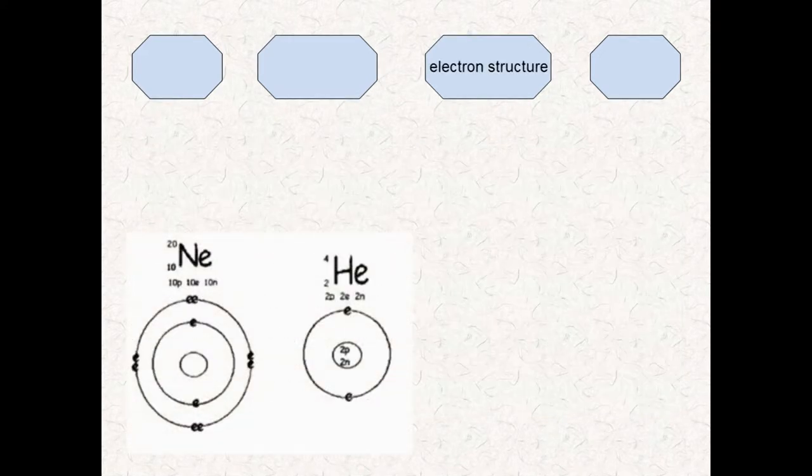The electron structure of helium is 1s squared, which means two electrons in the energy level 1 in an s orbital.